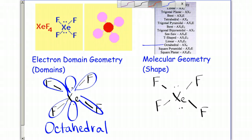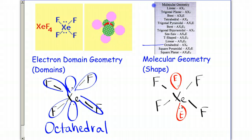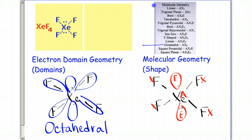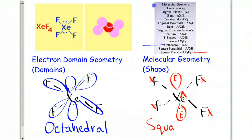For the molecular geometry, we have two lone pairs labeled as E's. The center atom is A, and each fluorine is X. So we have AX4E2, and that's going to be square planar.